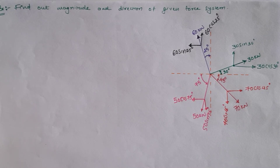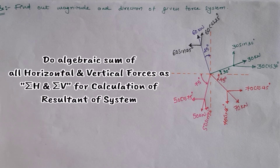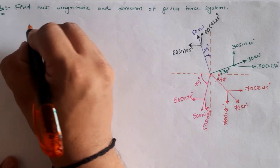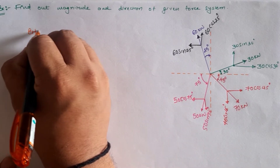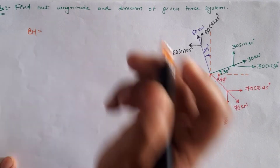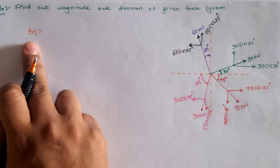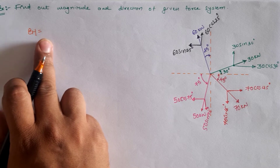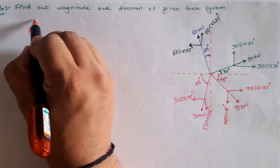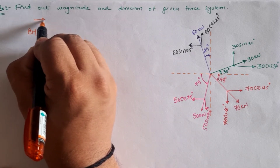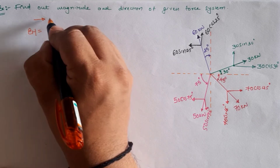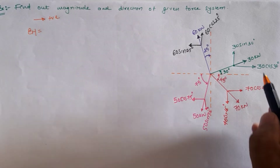First, we resolve the given force system into perpendicular components as shown in the figure. Next, we sum all horizontal forces and all vertical forces. For sigma H — the algebraic summation of horizontal forces — we assume forces toward the positive x-direction as positive.